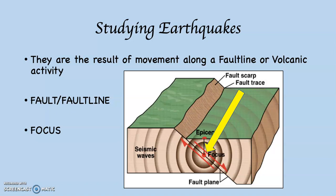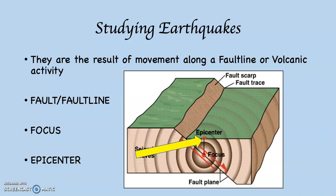Whenever an earthquake happens and you turn on the news, they never speak about the focus. What they tell you about is the epicenter. The epicenter is the place on the surface directly above the focus. For example, the 1994 earthquake in Southern California is referred to as the Northridge earthquake. In reality, Northridge was the epicenter, but the earthquake happened miles below Northridge. You give average people something to relate to — anybody can look at a map and see where Northridge is. That's the point of the epicenter: to give us, as surface dwellers, something to relate to. So the focus is actually where the earthquake starts; however, the place on the surface we relate to is called the epicenter, and the epicenter is directly above the focus.